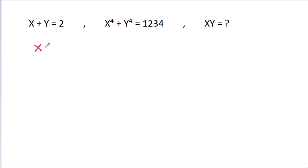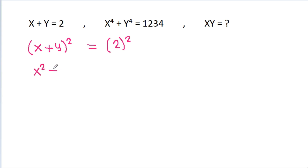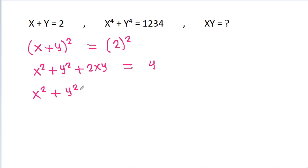So, we have x minus y is equal to 2, and if we square both sides, then it is x squared minus 2xy minus y squared, it is equal to 2 squared is 4, and x squared minus y squared will be equal to 4 minus 2xy.